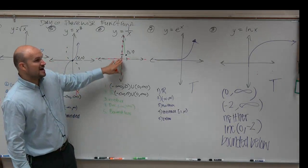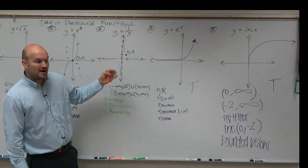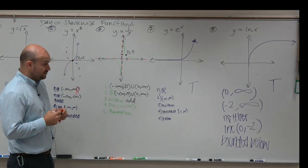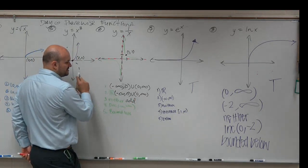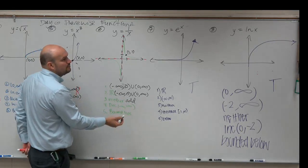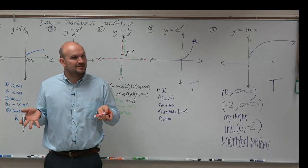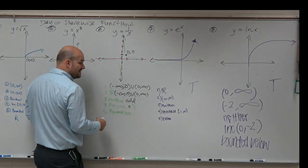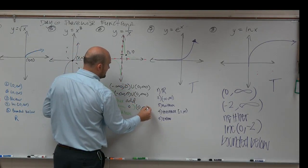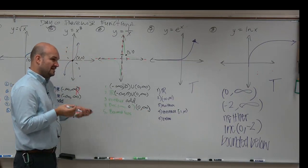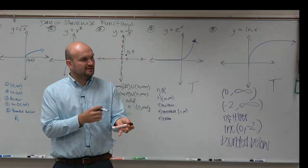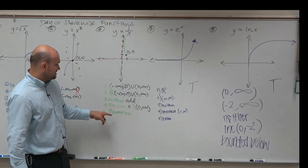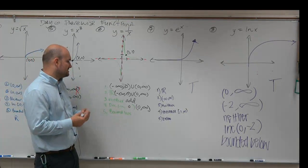The graph is actually odd. If you reflect the graph about the y-axis and the x-axis, you get the exact same graph, so it actually is odd. The graph is decreasing — we have to be careful here. It's not decreasing from negative infinity to infinity because it's undefined at 0. So we say it's decreasing from negative infinity to 0, and then it's also decreasing from 0 to infinity. If there are undefined values, we can't include those in the decreasing-increasing intervals. As for boundedness, it is not bounded.